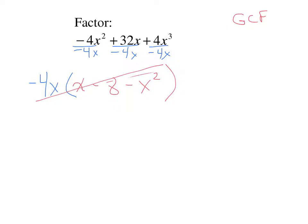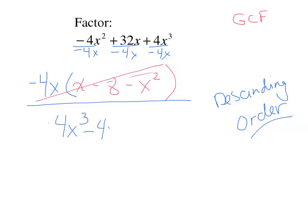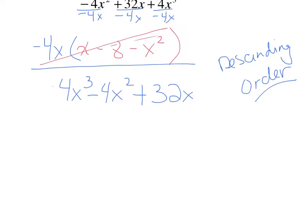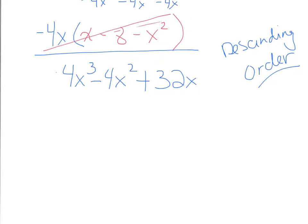Let's write the whole expression again in descending order. This x cubed term should go first. 4x cubed minus 4x squared plus 32x. And when we put it in descending order, we see we don't need to factor out the negative sign because it's not on the lead coefficient. There is still a 4 common and an x common, so we can still factor out 4x as a GCF.